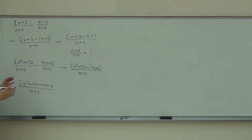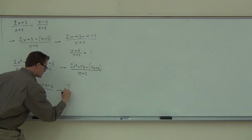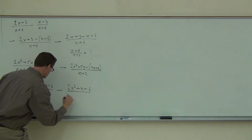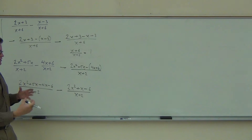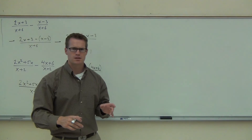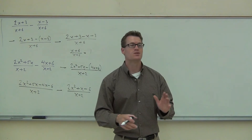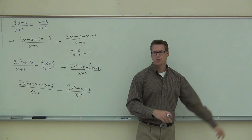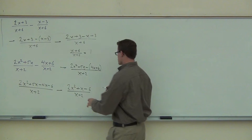Now we'll combine like terms because we know we can't simplify yet. We're going to try to factor just after this. So we have our 2x squared plus x minus 6 over x plus 2. And the next step, everybody, is to do what? Diamond. We're going to try the diamond problem to see if we can factor and simplify it. Because the simplified version is way easier to work with than a fraction like this, and if we can simplify that fraction, it's better.